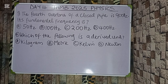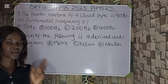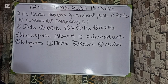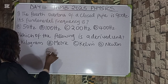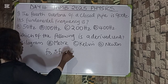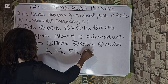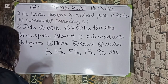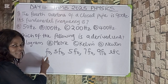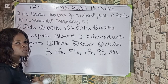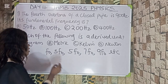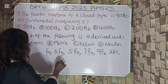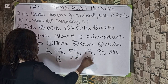Question three: the fourth overtone of a closed pipe is 900 Hz. Its fundamental frequency is what? For a closed pipe, the harmonics are f₀, 3f₀, 5f₀, 7f₀, 9f₀, and so on. These correspond to the zeroth, first, second, third, and fourth overtones respectively.